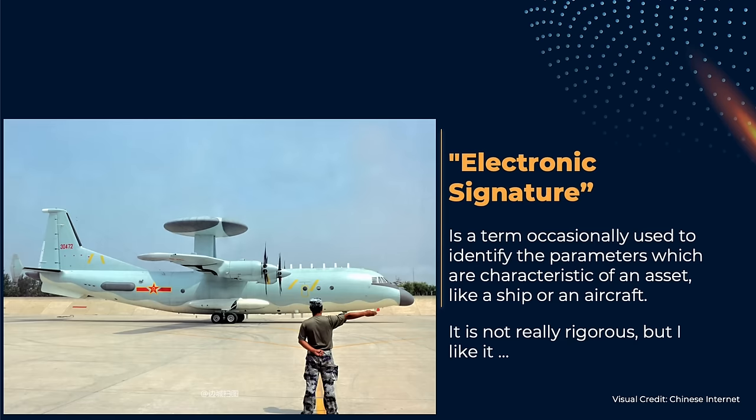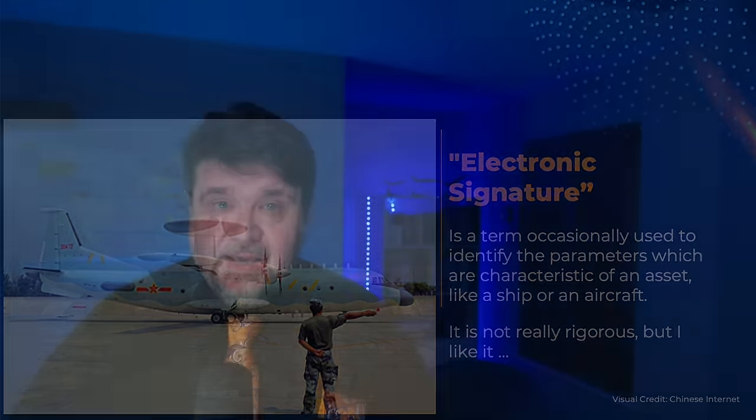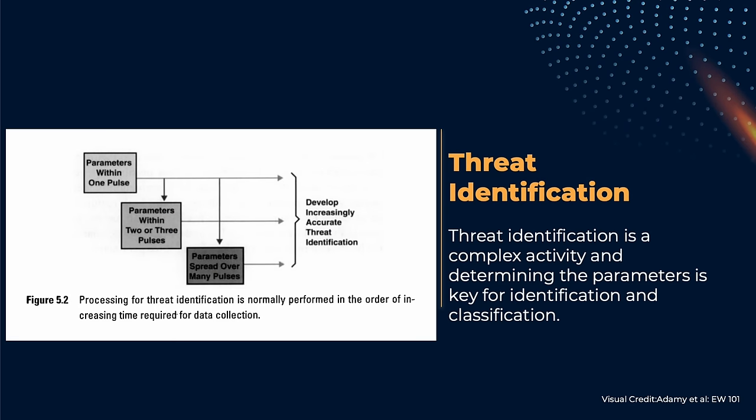Now we are capable of detecting the signals and tune on them for analysis. Then, what kind of parameters are we going to measure? This is extremely important, because the electronic signature of a radar is determined by these parameters. These parameters are then included in the threat libraries, and they are used on fighters, combat aircraft, and other assets to identify the potential threats.